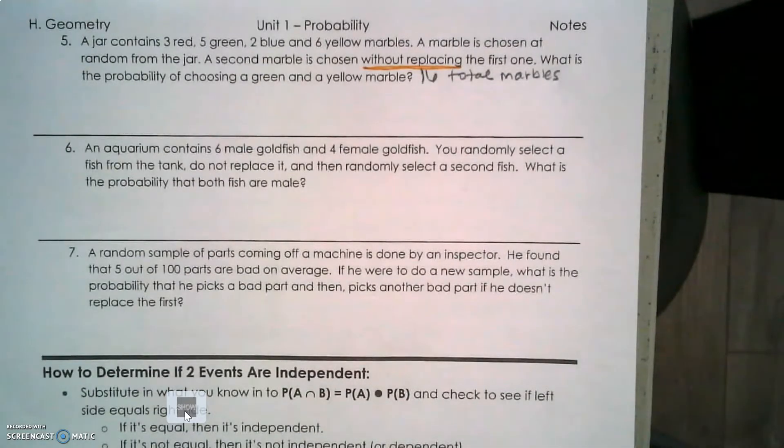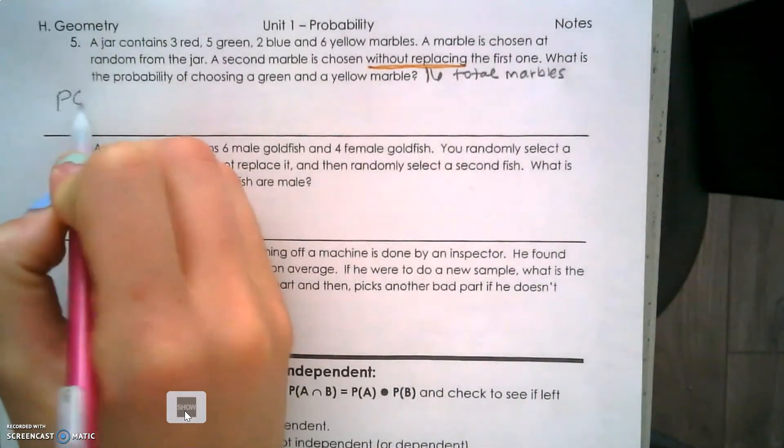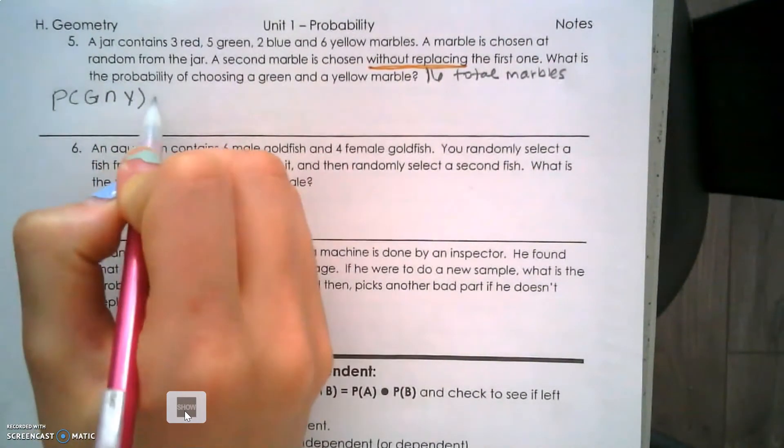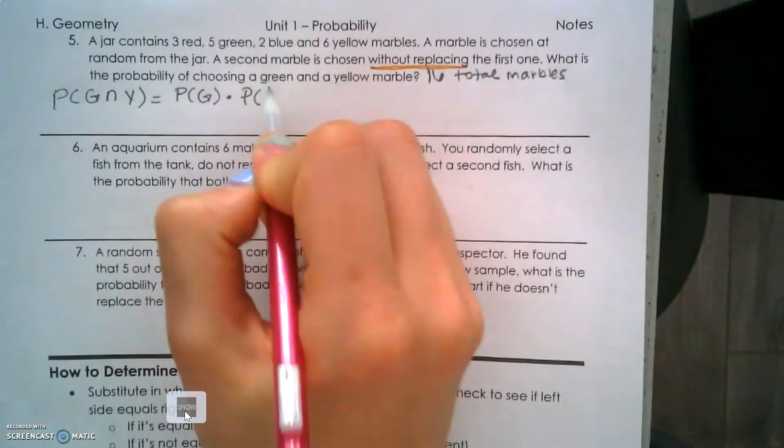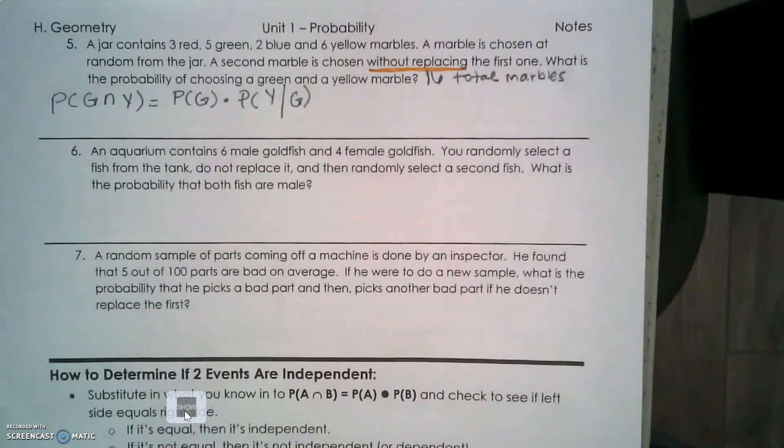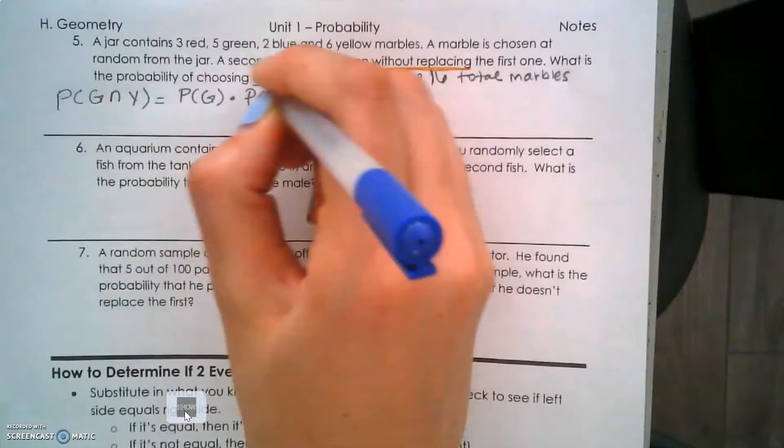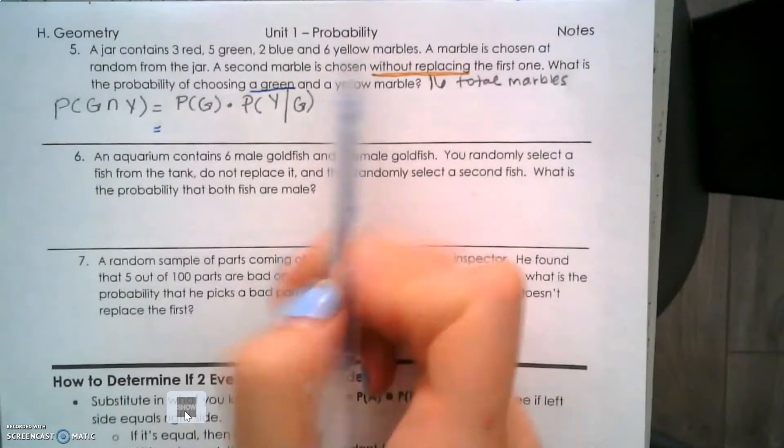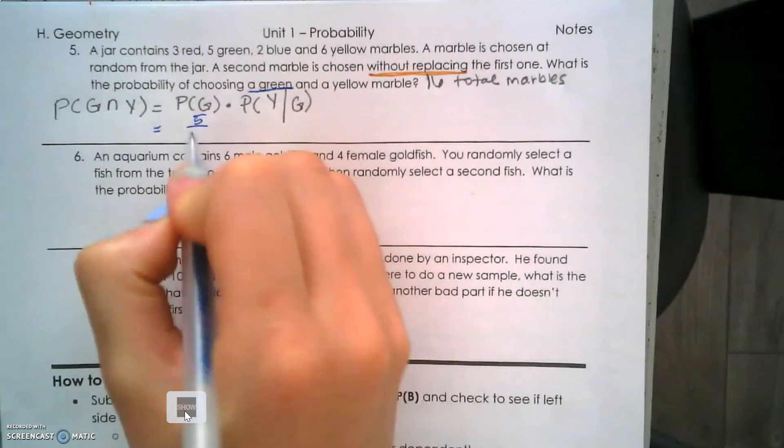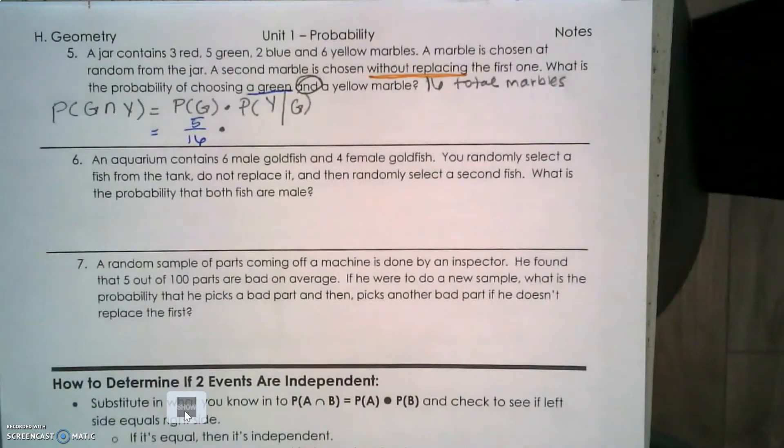What is the probability of choosing a green and choosing a yellow marble? Mathematically, this is written as P(green and yellow) = P(green) × P(yellow | green happened). Let's first work with the probability of green - that's 5 out of 16. The word 'and' tells us we're multiplying.